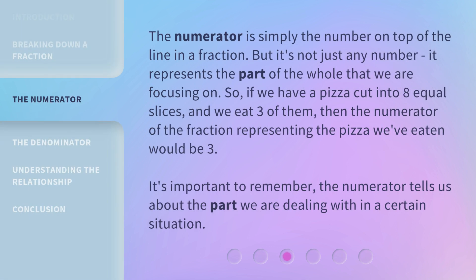The numerator is simply the number on top of the line in a fraction. But it's not just any number — it represents the part of the whole that we are focusing on. So, if we have a pizza cut into 8 equal slices and we eat 3 of them, then the numerator of the fraction representing the pizza we've eaten would be 3. It's important to remember, the numerator tells us about the part we are dealing with in a certain situation.